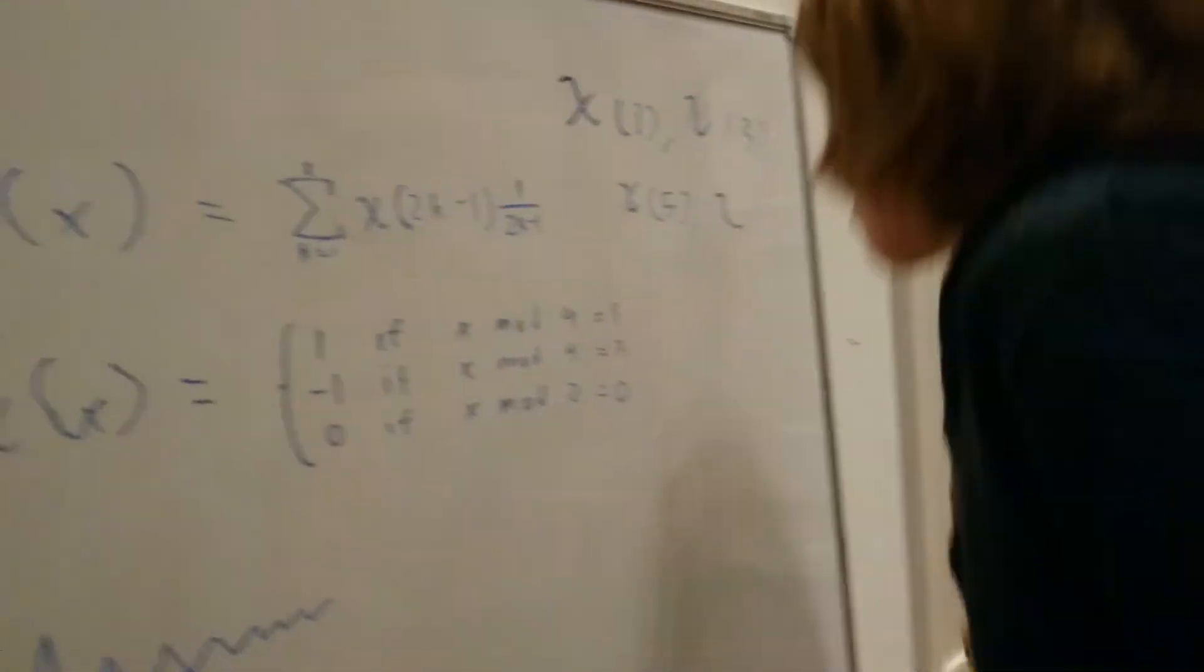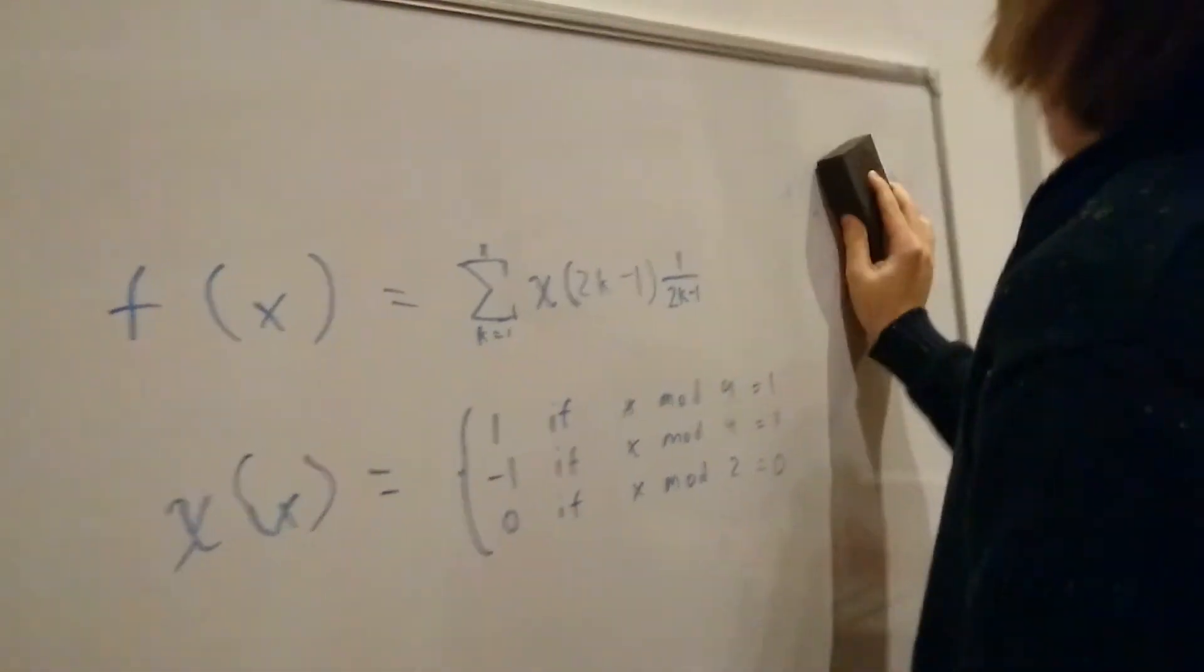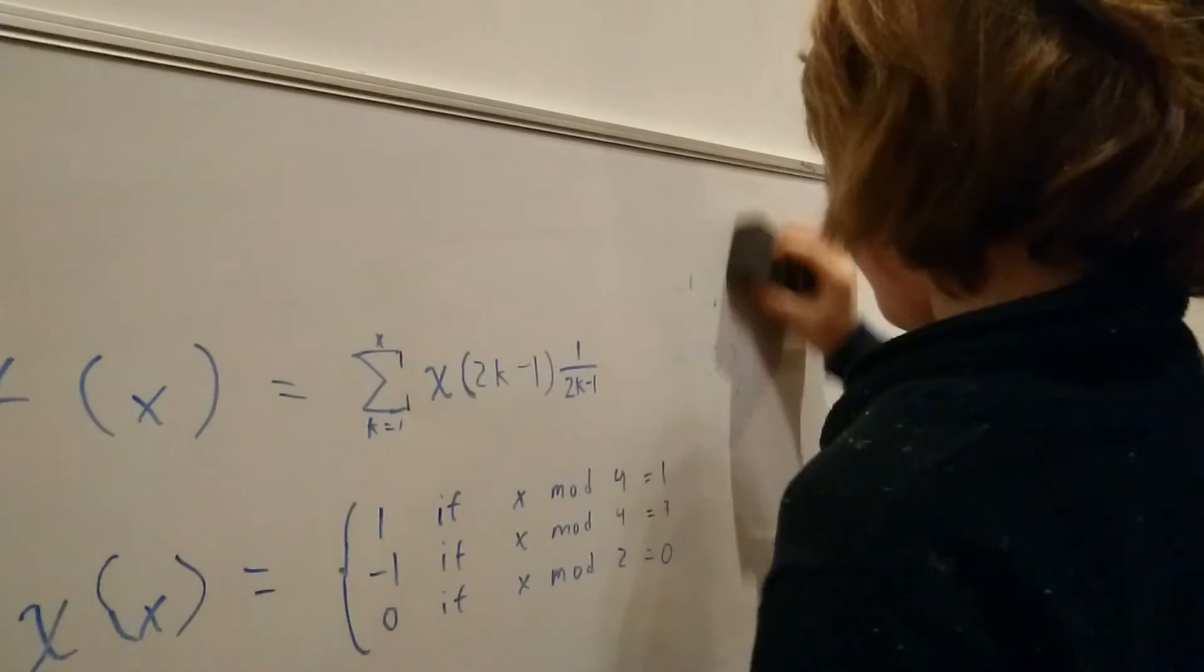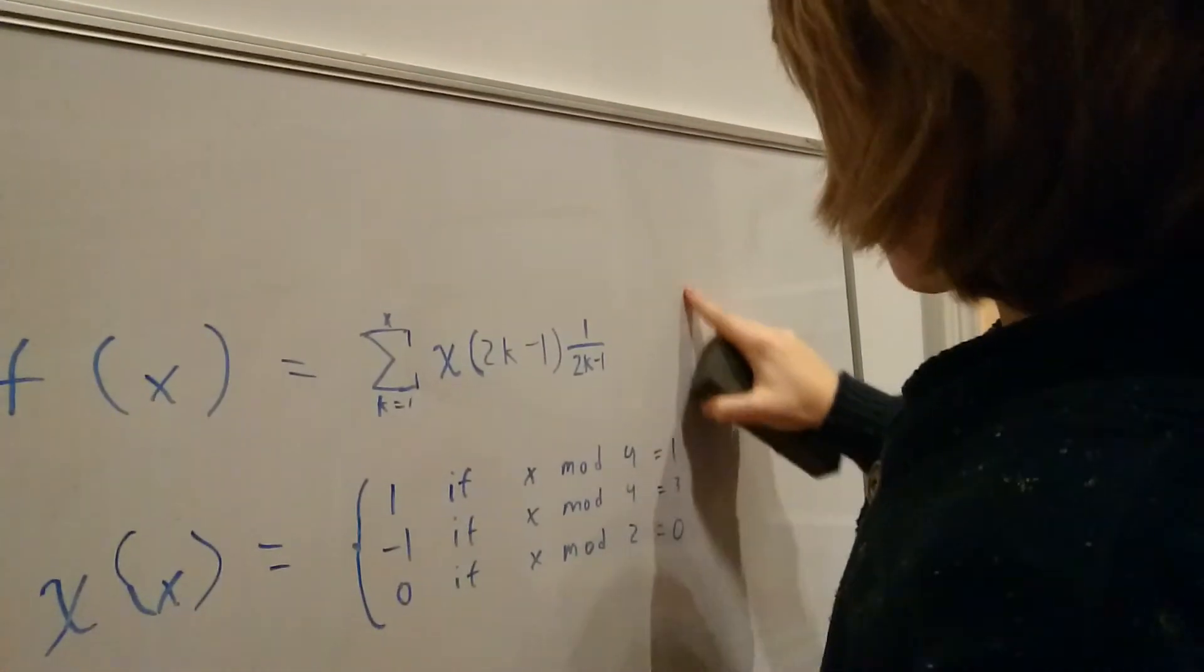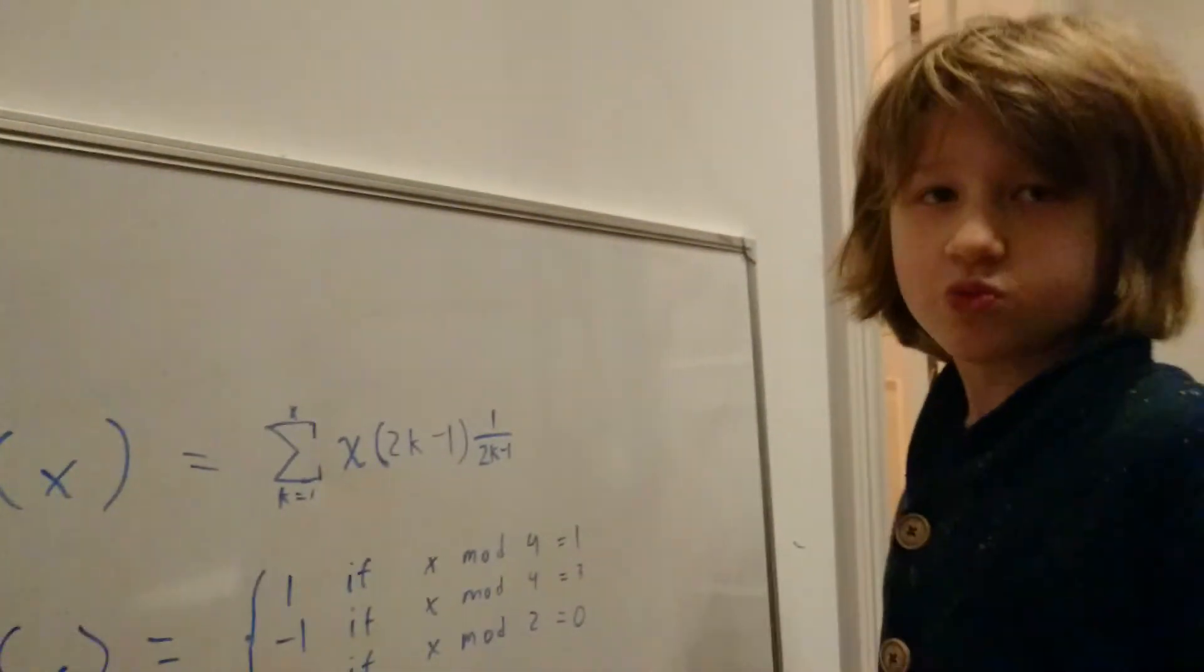Which actually oscillates between 1 and negative 1, and we multiply that by 1 over 2k minus 1.